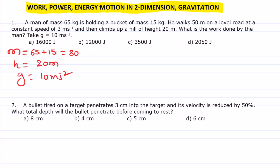change in potential energy, that is mgh. So here work done is equal to mgh. So mass is 80, g is 10, and this one is 20.